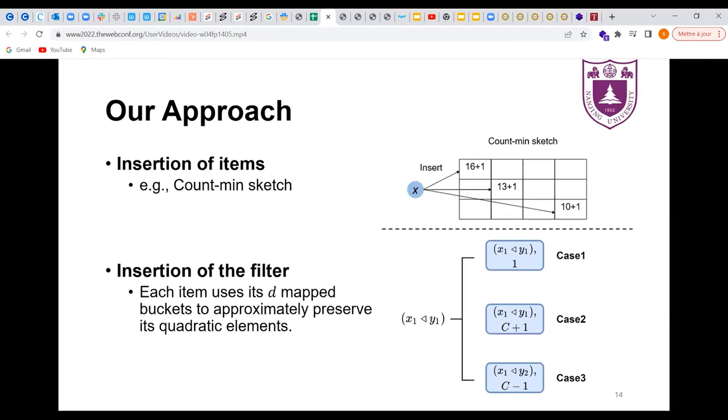Now, let's turn to the insertion of each data structure. As we have introduced count sketch before, we don't explain its operations here again. The intuition of the XFilter is that each item uses d mapped buckets to approximately preserve its quadratic elements. After finding the mapped bucket of current quadratic elements, there are three cases.